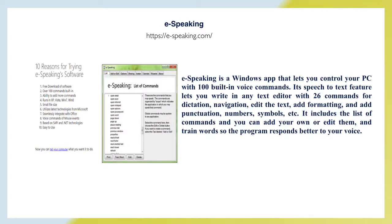eSpeaking is a Windows app that lets you control your personal computer with 100 built-in voice commands. Its speech-to-text feature lets you write in any text editor with 26 commands for dictation, navigation, text editing, formatting, and adding punctuation, numbers, and symbols. It includes a list of commands, and you can add your own or edit and train words so the program responds better to your voice.